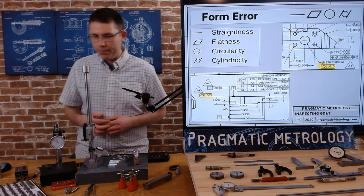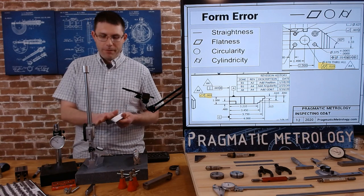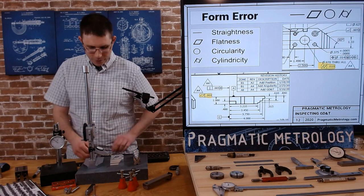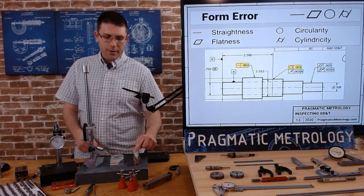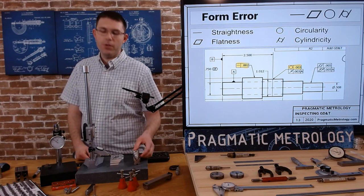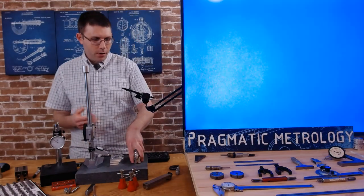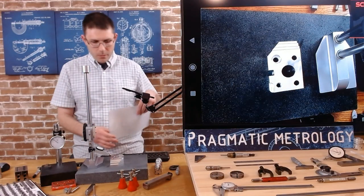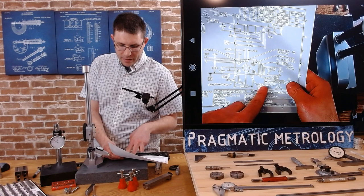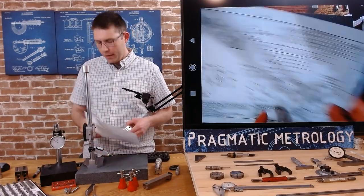Let's start with the form errors. We have a cylindricity of the hole, a flatness of the back side, a straightness on the shaft diameter, and circularity and runout on another diameter. Let's start off with the angle block — we have a cylindricity of ten thousandths and a 0.970-inch through-hole requirement.